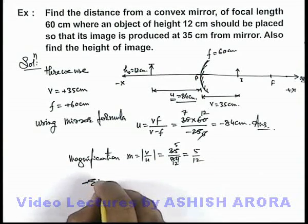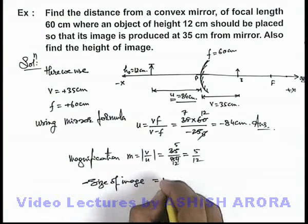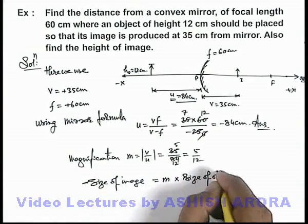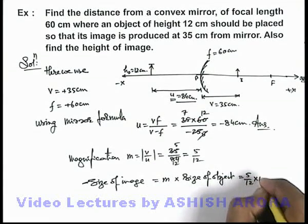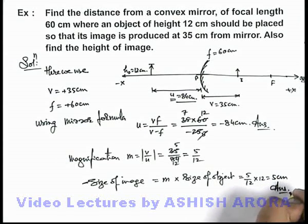We can directly write: size of image equals magnification times the size of object, which is 5 by 12 times 12, that equals 5 centimeters. That is another answer to this problem, the size of the image thus produced.